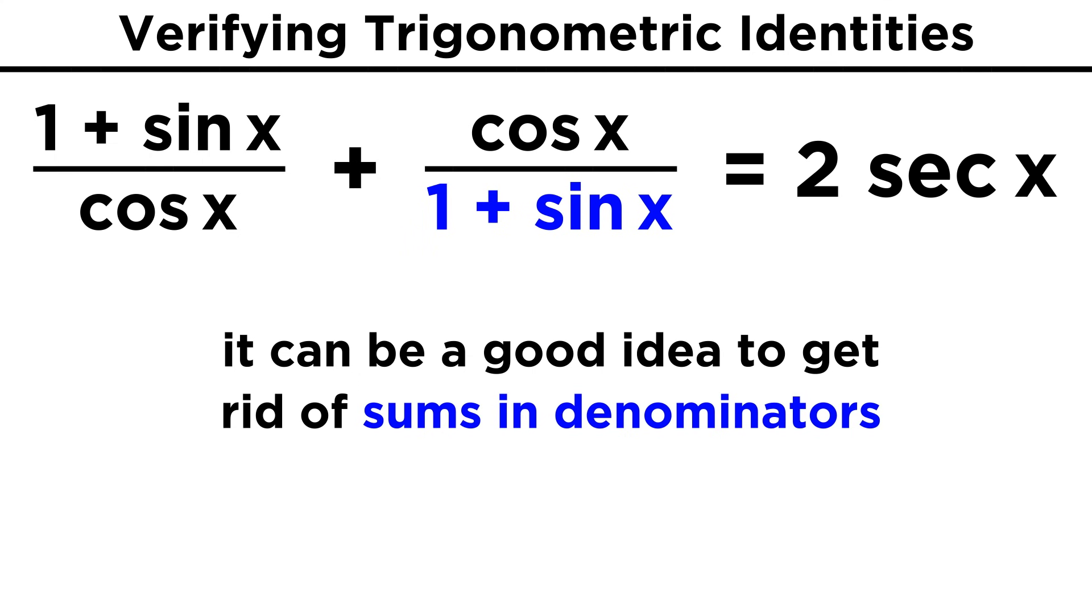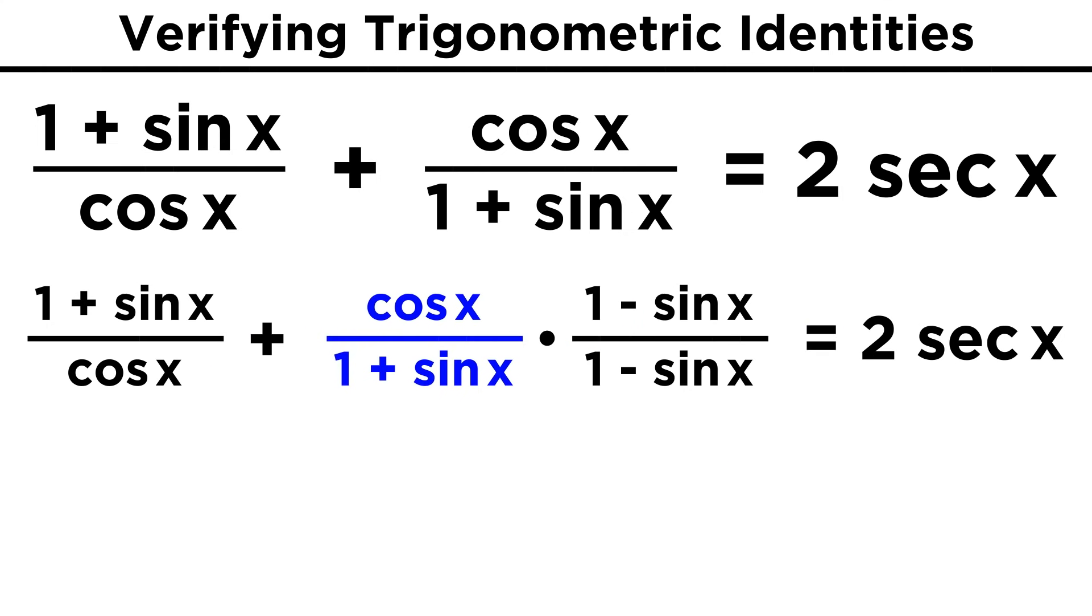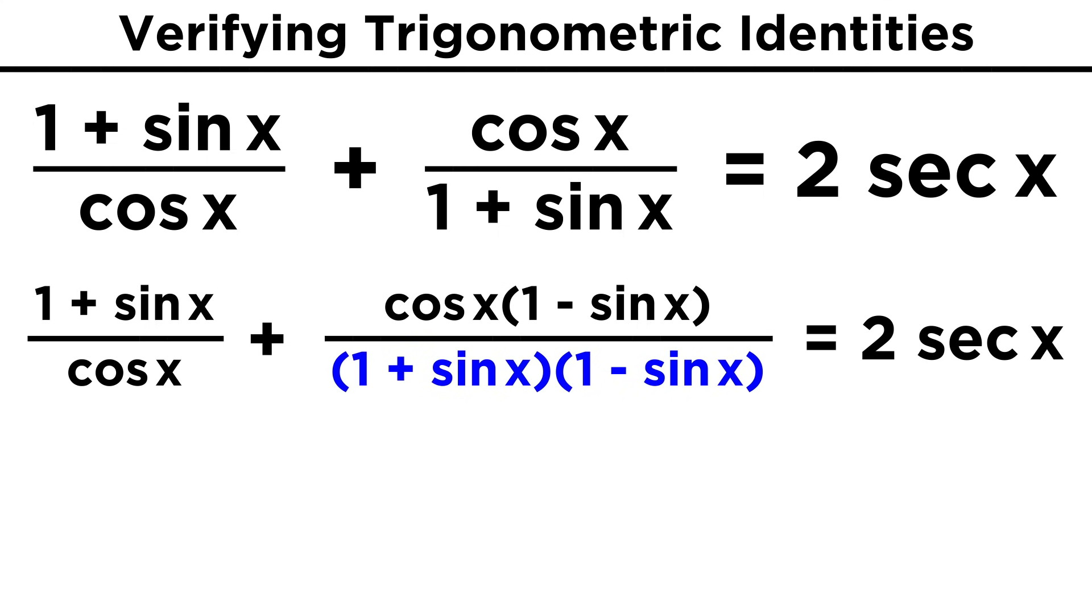If we remember how we used complex conjugates in manipulating complex numbers, we will know that the best thing to do here will be to multiply this fraction by one minus sine over one minus sine. On the bottom, we FOIL that out, and we get one minus sine plus sine minus sine squared. The sine terms cancel, leaving us with one minus sine squared, which equals cosine squared.